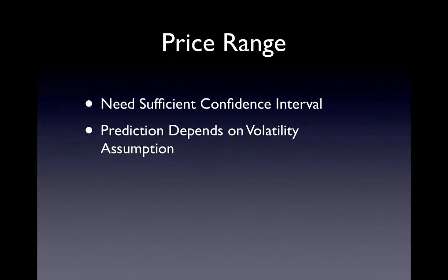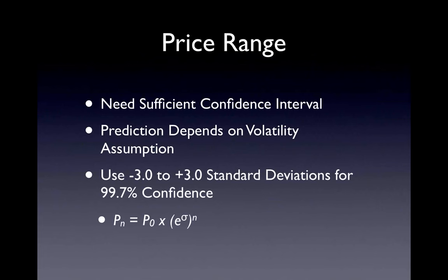Option traders are typically attempting to make a profit over a range of the underlying price. Since we cannot know all possible prices, we need to pick a range that gives us enough confidence in the expected profit. Predicting this range depends on an expectation of the volatility of the underlying price over time. Since volatility measures the standard deviation of underlying price returns, we can use standard deviations to determine the price range for a desired confidence interval. Professional risk managers typically use minus three to plus three standard deviations, corresponding to a 99.7% confidence interval.